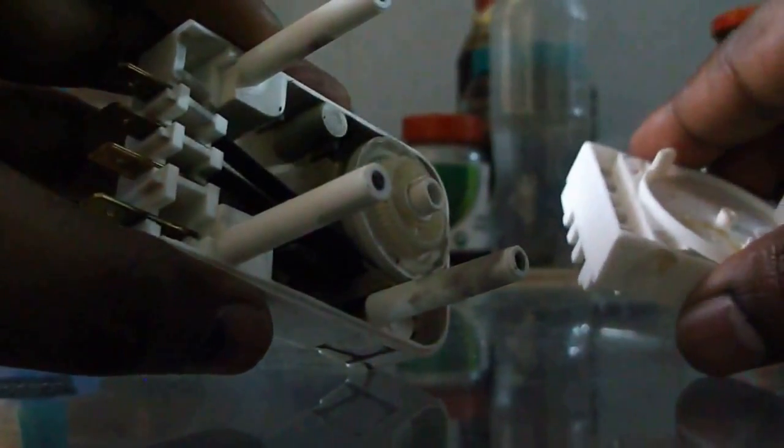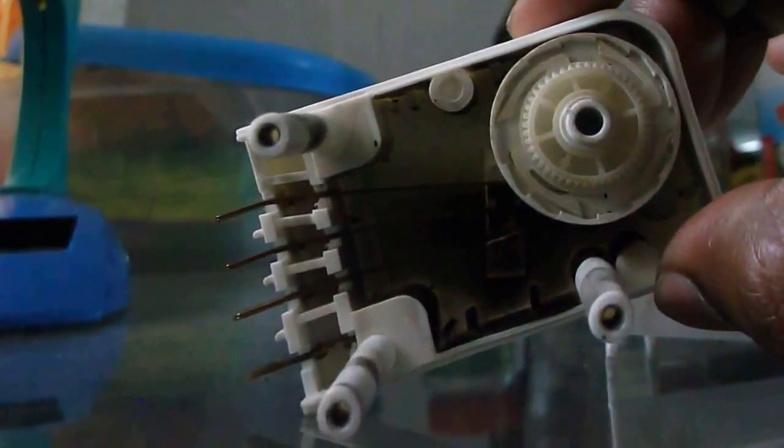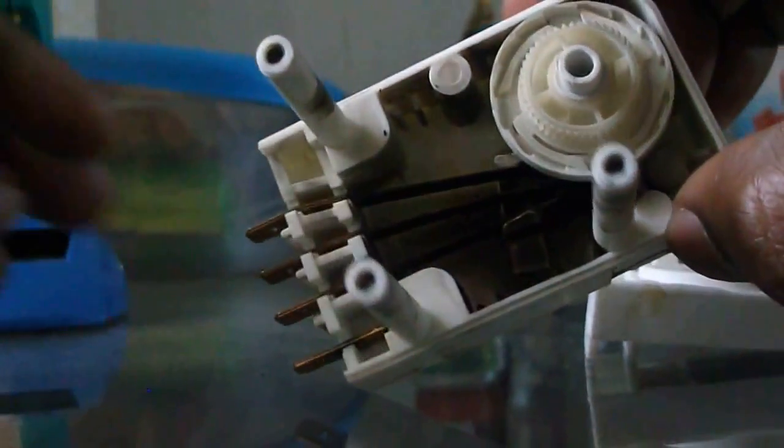The final part is to examine the relay part. This is oftenly fails. Let me slowly pull the cover. Once it is open, you can see there is lot of carbon deposit. That indicates something is burnt off.